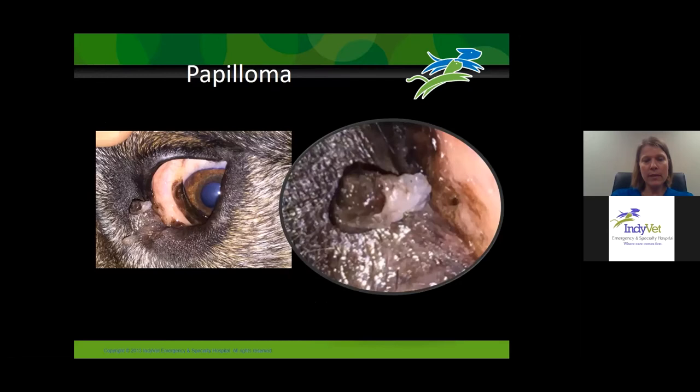These are the typical appearance of a papilloma — pedunculated, sometimes with pigment and pink areas. They're pretty easy to treat. Sometimes I'll be treating one eyelid tumor and find that one of them turns out to be a papilloma.